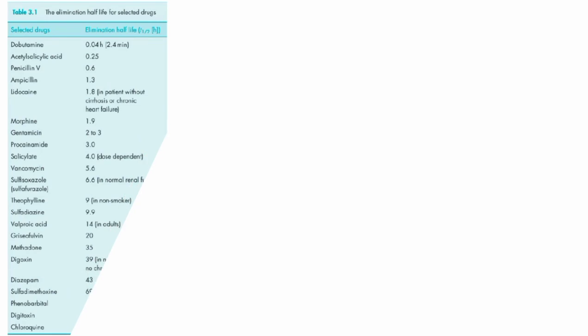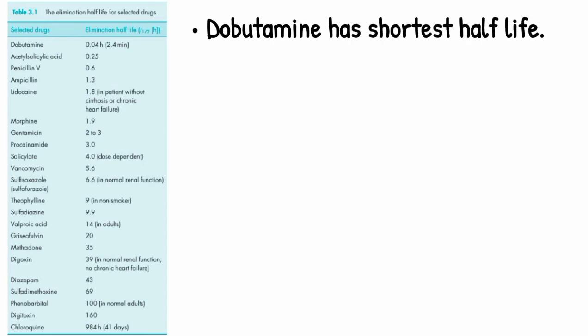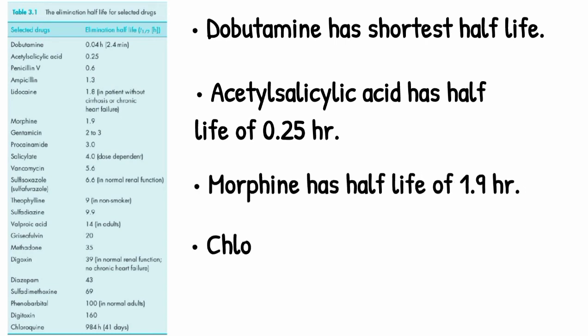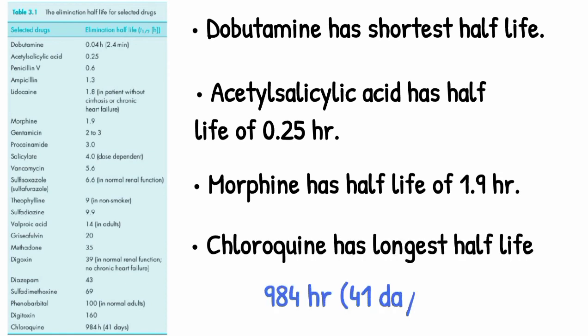So here are some examples of elimination half-life for selected drugs. As you can see from the table, dobutamine has the shortest half-life of about 2.4 minutes, acetylsalicylic acid has an elimination half-life of 0.25 hours, and morphine has an elimination half-life of 1.9 hours. Chloroquine has the largest half-life of about 984 hours, and that is approximately equal to 41 days.